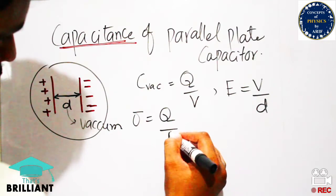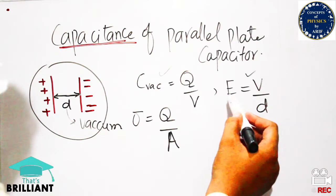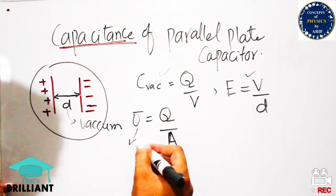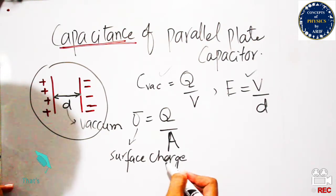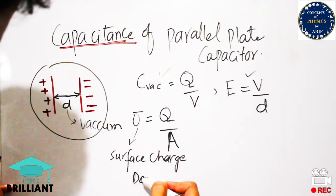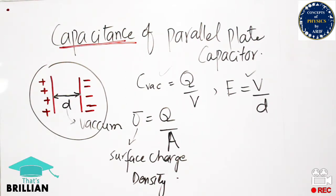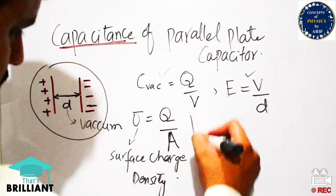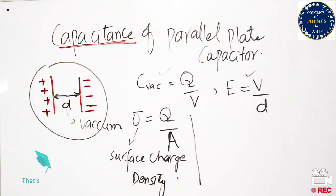Surface charge density is equal to charge per unit area — that is, the number of charges per unit area of the plate. This is denoted by sigma (σ). Our goal is to calculate the capacitance of the vacuum case, where one plate contains a positive charge and the other a negative charge.